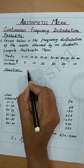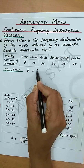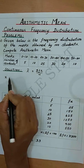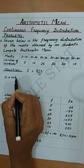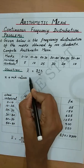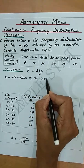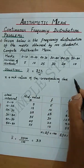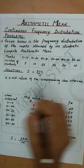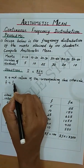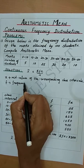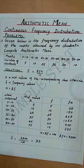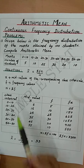The formula for finding arithmetic mean for continuous frequency distribution is x̄ = Σfx / n, where x denotes mid values of the corresponding class intervals, f denotes frequency values, and n is equal to Σf.